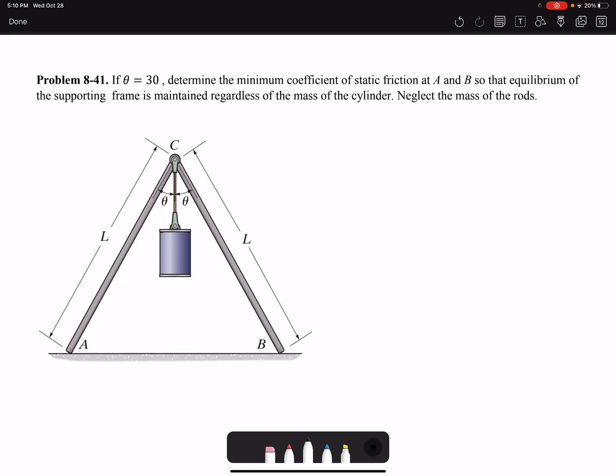Hello everyone, in this video I'm going to solve Problem 8-41 of Chapter 8. If theta is 30 degrees, determine the minimum coefficient of static friction at A and B so the equilibrium of the supporting frame is maintained regardless of the mass of the cylinder. Neglect the mass of the rod. We have two members in this frame.